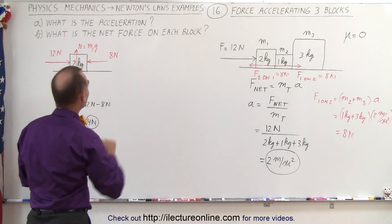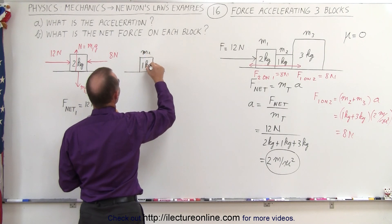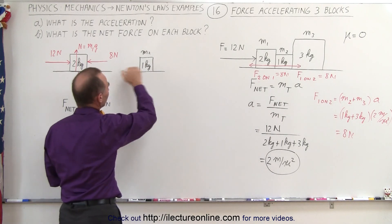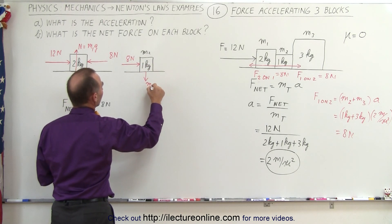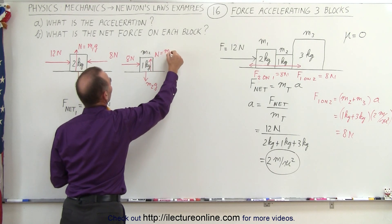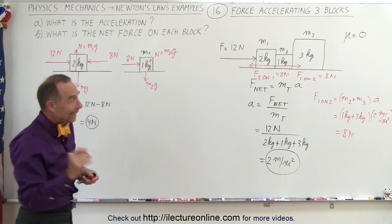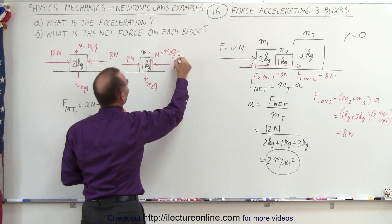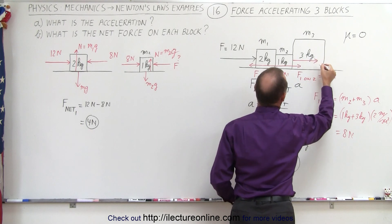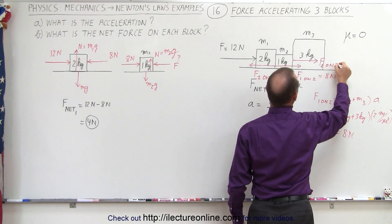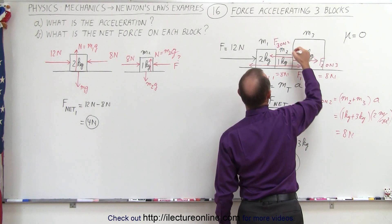Now we do the same for block M2. Drawing another free body diagram — here's block M2, which is 1 kilogram. From the previous work, there's an 8 newton force pushing it to the right. We still have M2g for gravity and the normal force pushing back, which equals M2g, so those cancel each other out. Then there's one more force pushing to the left. Block M2 pushes against M3, giving a force F from 2 on 3, and there will be an equal and opposite reaction force from 3 on 2.